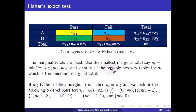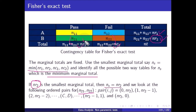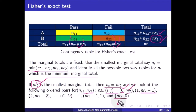The marginal totals are fixed — this is important. Use the smallest marginal total: ns equals the minimum of nr1, nr2, nc1, and nc2. Identify all possible two-by-two tables for ns. Say nr2 is the smallest, so ns equals nr2. We look at the following ordered pairs for n21 and n22: initially i equals 0 and j equals nr2; then increment i and decrement j (giving 1 and nr2 minus 1), continuing until i equals nr2 and j equals 0.